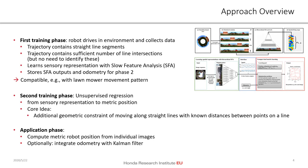Our approach has three phases: two training phases and one application phase. During the first training phase, the robot drives around in the environment and collects data. We assume that the trajectory contains straight line segments and that sufficiently often these line segments intersect each other. Please note that in contrast to SLAM loop closures, we do not need to identify these explicitly. We learn slow feature analysis on the visual inputs and store the SFA outputs and the odometry for phase two. This movement behavior is compatible with that of a lawnmower robot.